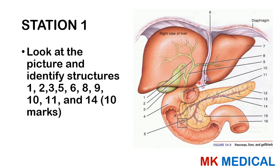Beginning with station one: look at the picture and identify the labeled structures. This is a purely anatomy question, very important especially when discussing obstructive jaundice or hepatobiliary pathologies. With surgery, you need a very good understanding of anatomy, so you need to revise your anatomy. Here comes the answer. We'll begin with orientation. This structure over here is, of course, the liver. The liver can be divided into two anatomical lobes: the right lobe and the left lobe. The diaphragm separates the chest from the abdomen.